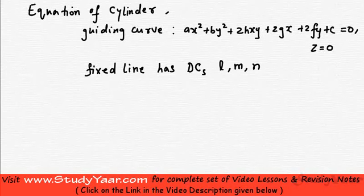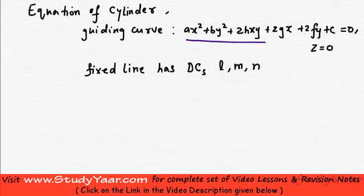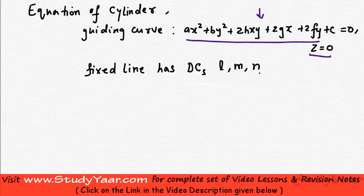Let's find out the equation of a cylinder whose guiding curve is quadratic in x and y and whose fixed line has direction cosines l, m, and n. The guiding curve is essentially a conic given by this equation in the xy-plane, which is z equal to zero, and the fixed line has direction cosines l, m, and n.